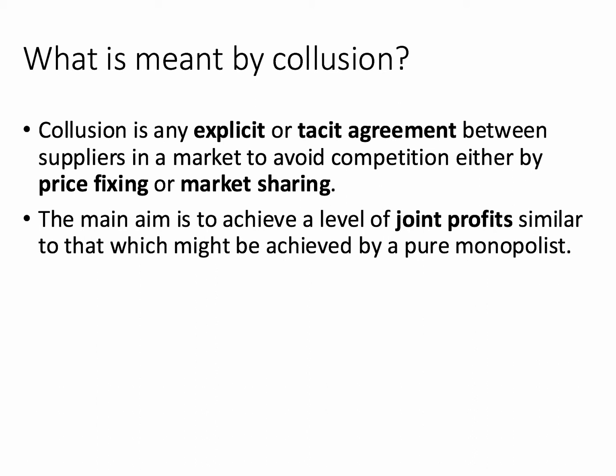The main aim of collusion is to achieve a level of joint profits similar to that which might be achieved by a pure monopolist. So the main aim of collusion, apart from reducing uncertainty, is to increase the joint profits of businesses involved in the collusion.